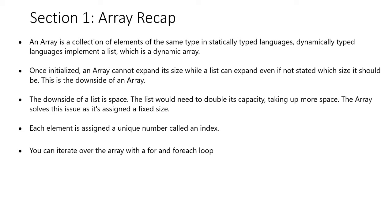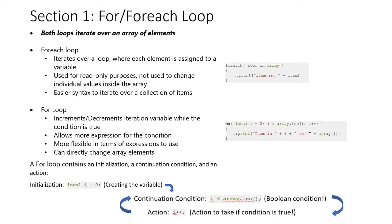Each element is assigned a unique number called an index. You can iterate over the array with a for loop and a for-each loop. Both loops iterate over an array of elements. A for-each loop iterates over a loop where each element is assigned to a variable — used for read-only purposes, not used to change individual values inside the array. It has easier syntax to iterate over a collection of items. A for loop increments or decrements; the iteration variable can vary while the condition is true, allows more expression for the condition, more flexibility, and can directly change array elements.